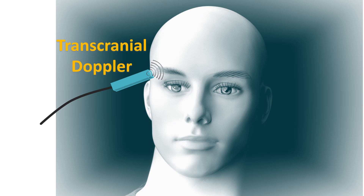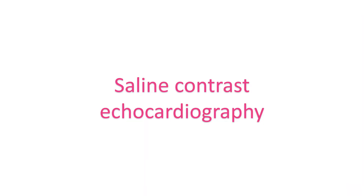Another test is transcranial Doppler, an ultrasound study of the head which looks for tiny air bubbles in the cerebral arteries. For detecting a right-to-left shunt across the PFO, agitated saline containing tiny air bubbles is injected into a right forearm vein. If air bubbles are detected by the transcranial Doppler machine, it is presumed that tiny blood clots can also pass across the PFO to produce a stroke. Right-to-left flow of tiny air bubbles will also be seen in the left atrium on echocardiogram. This technique is known as saline contrast echocardiography. Air bubbles appear as white dots while blood-filled regions are black on echocardiogram.